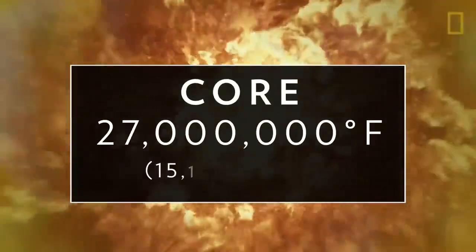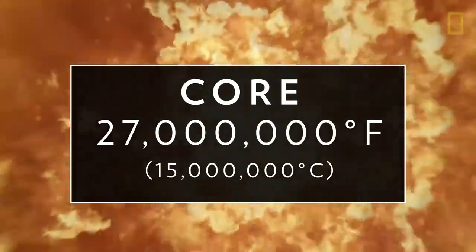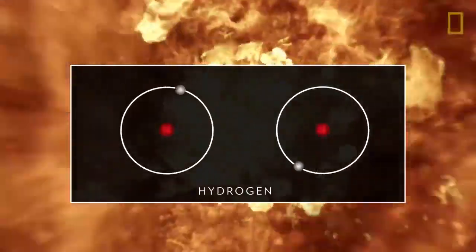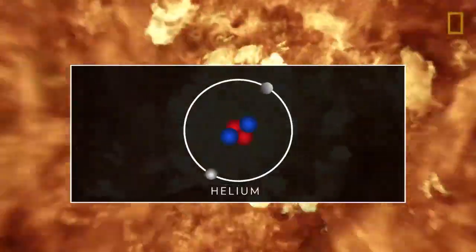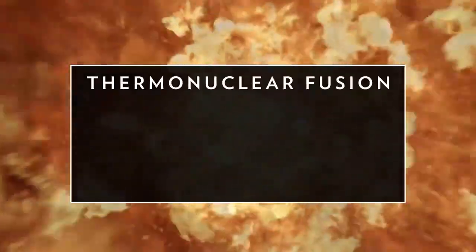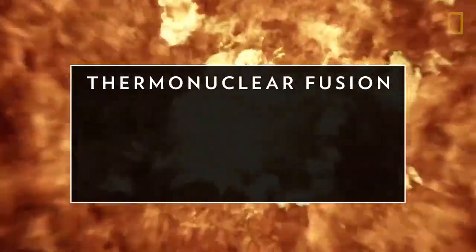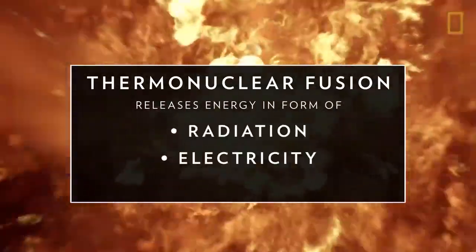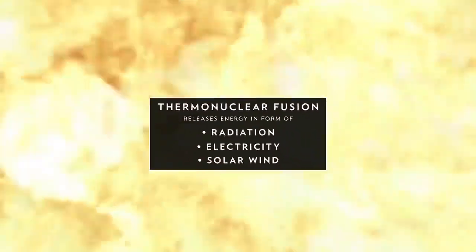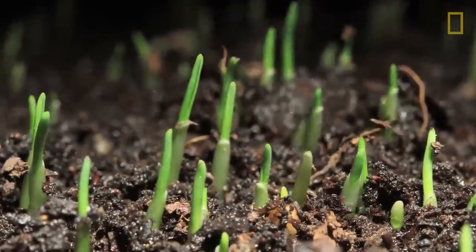In the core, temperatures reaching at least 27 million degrees Fahrenheit, combined with the sun's powerful gravity, fuse together hydrogen molecules to create helium. Called thermonuclear fusion, this releases an enormous amount of energy in the form of radiation, electricity, solar wind, and, as we experience on Earth, life-giving heat and light.